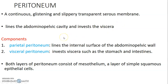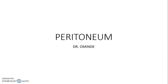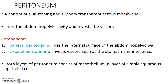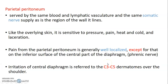It has two components: the parietal, which is outer and lines the internal surface of the abdominal pelvic wall, and the visceral peritoneum that actually invests the viscera like the stomach and the intestines. Both of them are lined by mesothelium, which is simple squamous epithelial lining.